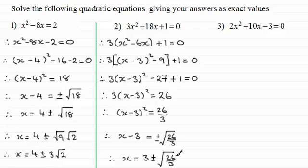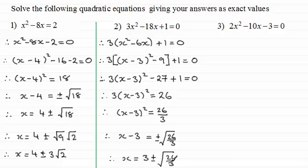Note that with a fraction under the square root, it's the same as the square root of the numerator divided by the square root of the denominator. Since neither root 26 nor root 3 simplify to a nice value, we just leave it in that exact form. If you need a decimal answer, simply enter the expression into your calculator.